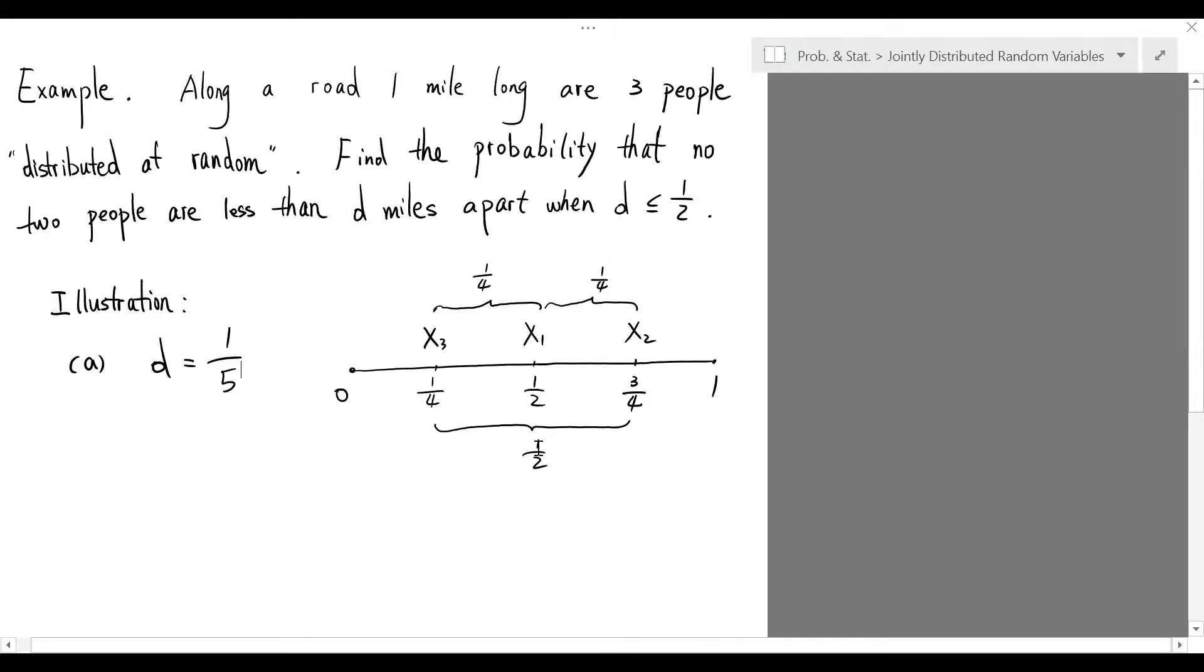If we choose d to be 1 fifth, then no two people in this distribution are less than d miles apart.